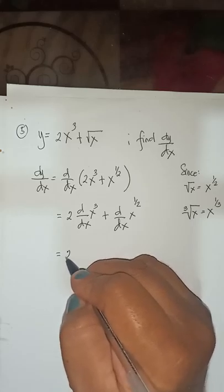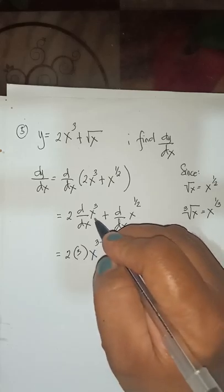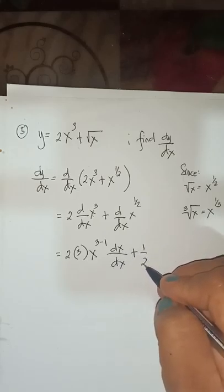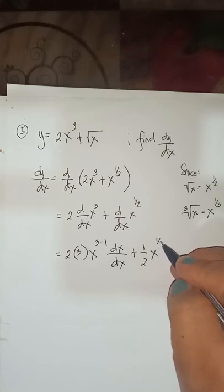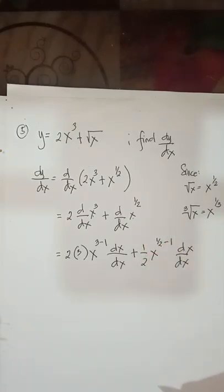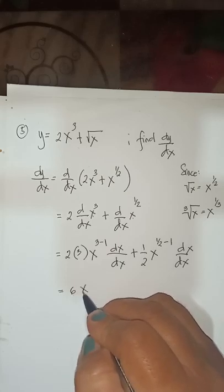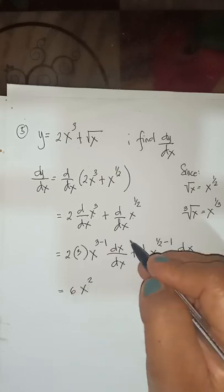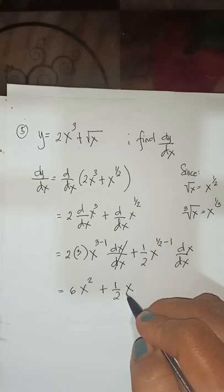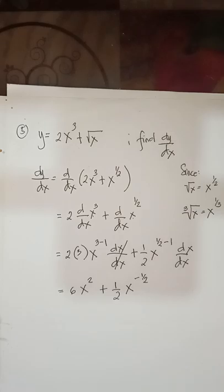Find the derivative: 2 times d/dx of x cubed plus d/dx of x raised to 1 half. You will have 2 times 3x to the cube minus 1, plus 1 half times x to the 1 half minus 1. Therefore, you get 6x squared plus 1 half x to the negative 1 half. Because 1 half minus 1 equals negative 1 half.